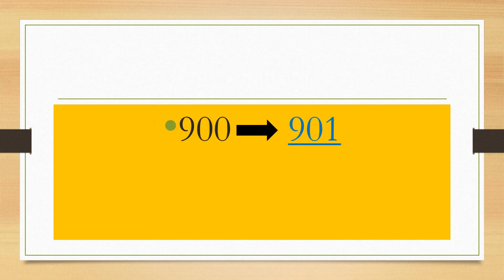Now let us have one more example. To find out the after number of 900, we have to count forward and the number we get is 901. So the number after 900 is 901.